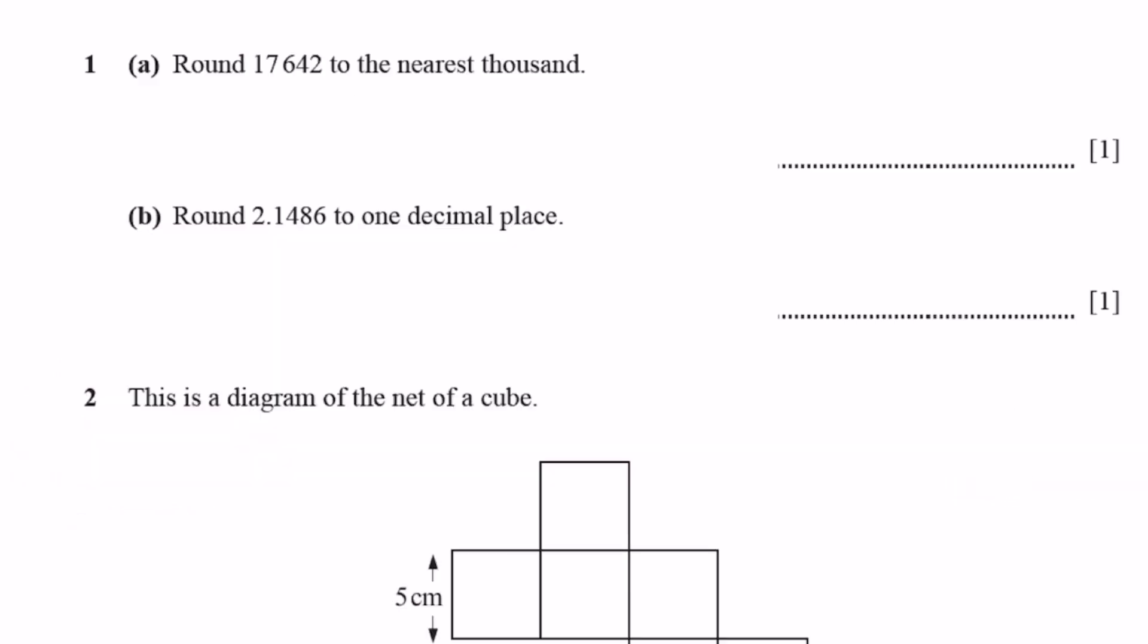Question 1a. Round 17,642 to the nearest thousand. The nearest thousand means the next place value is the hundreds. In the hundreds place, we have a 6, which is greater than 5. That's why we can add one to the thousandth digit, so it'll be 18,000.